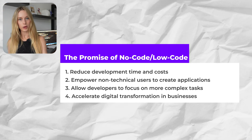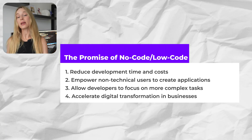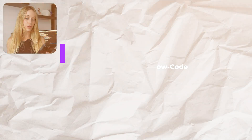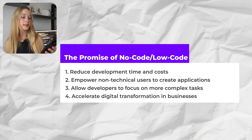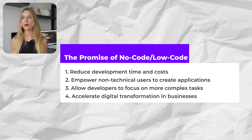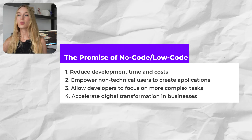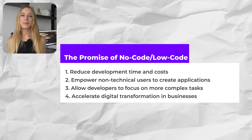I made a list here. One is reduced development time and costs. Another is empowering non-technical users to create applications or parts of applications — with a tool like Webcrumbs, no longer does only a developer need to prompt it. Anyone can. Another is allowing developers to focus on more complex tasks — so non-technical people use these tools while more technical people handle complex processes. And the fourth is accelerating digital transformation in businesses. Now more than ever we're able to move quicker, and as competition moves rapidly, more businesses are going to want to get on that train.